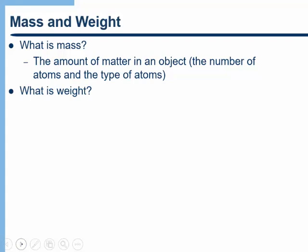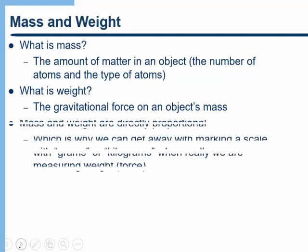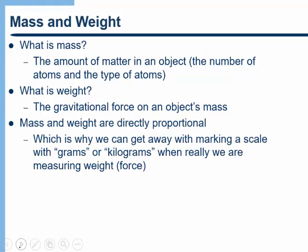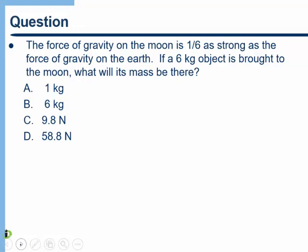What is weight? In everyday speech, we often use these words interchangeably, but they don't mean the same thing. Weight is the gravitational force on an object's mass. So weight is a shorthand for the force of gravity. Now, mass and weight are directly proportional here on Earth. If I have one kilogram, that has a certain weight to it. If I have two kilograms, it will have twice as much weight. And so that's why when we set up scales on Earth, we can mark them in grams or kilograms when really what we're doing is we're measuring the force of gravity because they are directly proportional to each other.